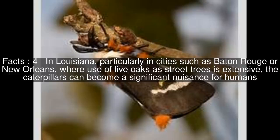The caterpillars of this moth can also be found in some areas of Virginia, such as the Goshen Scout Reservation, where they are infamous for stinging people going to a summer camp in the area.